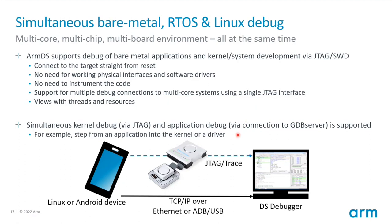You can be running bare metal applications while also running Linux applications or the Linux kernel at the same time. You can connect to bare metal and the Linux kernel through a JTAG probe and trace probe. You can also connect to user-space applications using GDB, or if you're debugging an Android device, using ADB — and these can happen simultaneously so you can see how a user-space application affects the kernel.